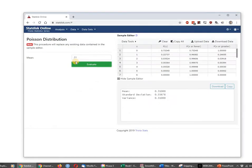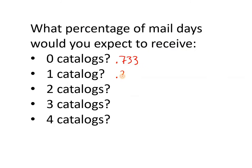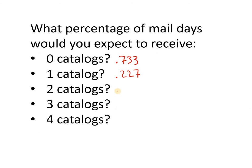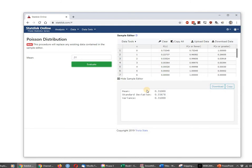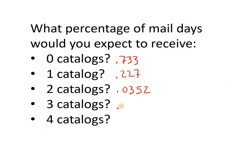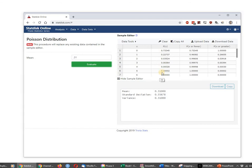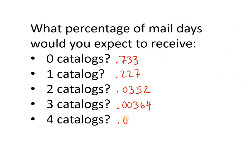P(1) = 0.227, so about 23% of the time you'd expect to walk out to the mailbox and get one catalog. P(2) = 0.0352, P(3) = 0.00364, and P(4) = 0.00028.